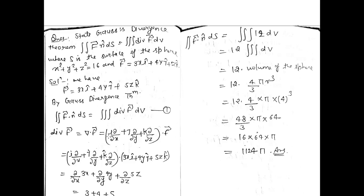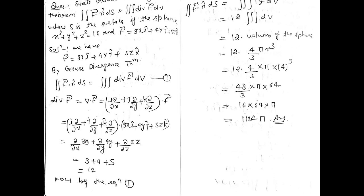Divergence of f-vector will be del dot f-vector: (i ∂/∂x + j ∂/∂y + k ∂/∂z) dot f-vector. After putting the f-vector value, differentiating 3x with respect to x, 4y with respect to y, and 5z with respect to z — since i·i=1, j·j=1, k·k=1, and i·j=0, i·k=0, j·k=0. So we get 3 + 4 + 5 = 12. The divergence of f-vector is 12.